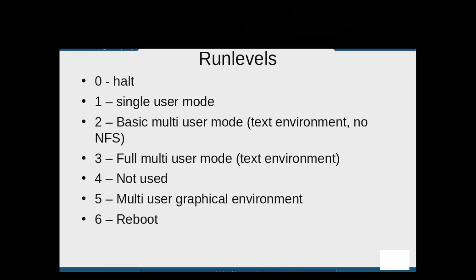Run level 0 means the system is shut down. Run level 1 is single user mode — that single user is root — mostly used for making repairs, with no network access. This is also the mode where you can reset the root user's password. Run level 2 is multi-user text-based mode without access to NFS shares, though other networking resources can be available. Run level 3 is full multi-user mode with NFS access and all networking services available, also text-only. Run level 4 is unused but can be customized by the administrator.